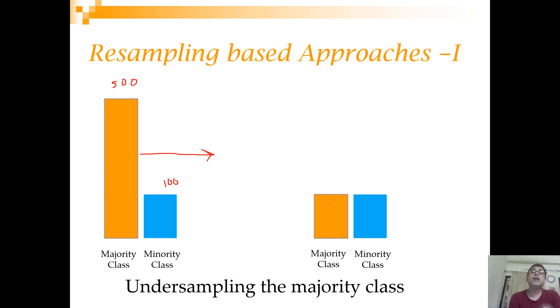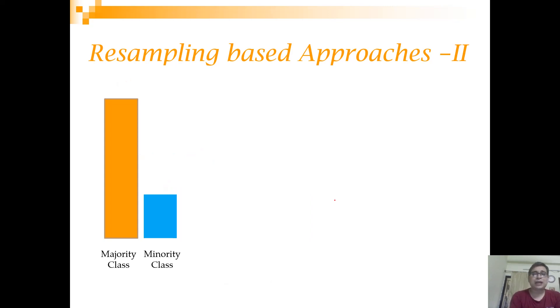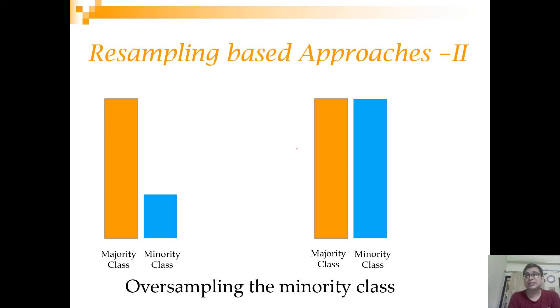What is the problem? The problem is we are losing information. We are ignoring 400 observations which we have painstakingly collected. So not a good idea. A second approach is that we can increase the minority class by doing a sampling with replacement. We can make both of them 500. Such an approach is called upsampling or oversampling the minority class. What is the problem? The problem is overfitting because you are now trying to overfit to this data because it's repeating so many times.